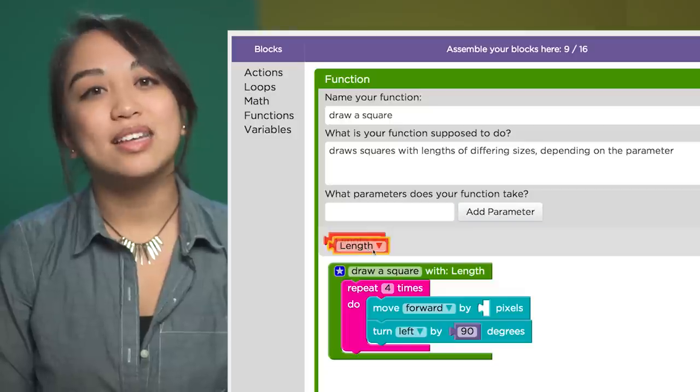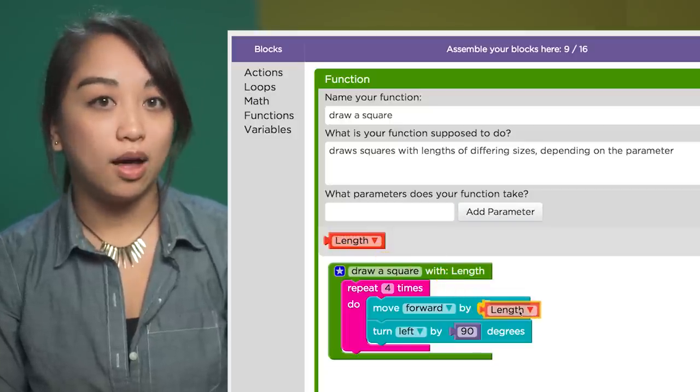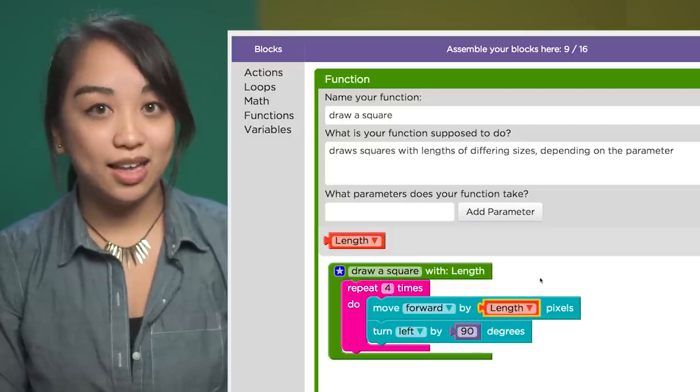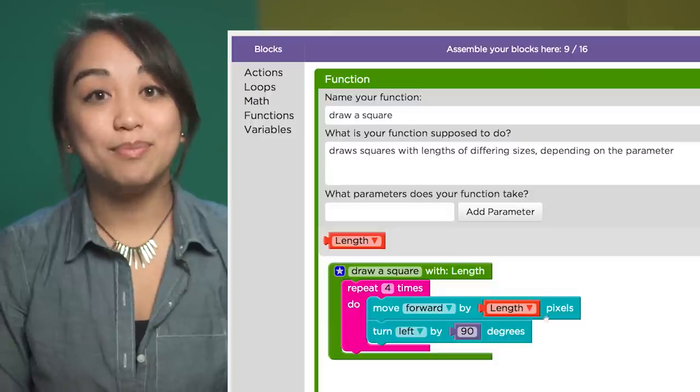Now we can replace the move forward by 100 block with the parameter length, so it will move forward by length.